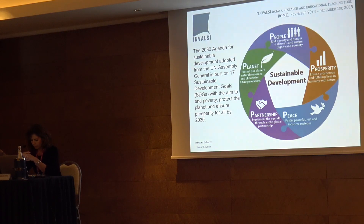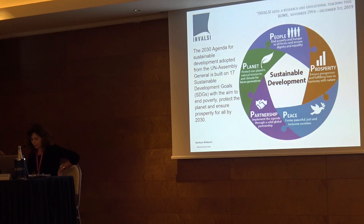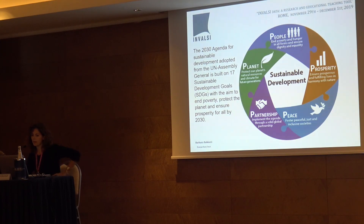The 2030 Agenda for Sustainable Development Goals was adopted by the United Nations in 2015 and was built with 17 goals which aim to end poverty, protect the planet, and ensure prosperity for all people. This agenda is also known as the Agenda of 5P: we talk about People — addressing poverty and hunger in all forms and ensuring unity and equality.